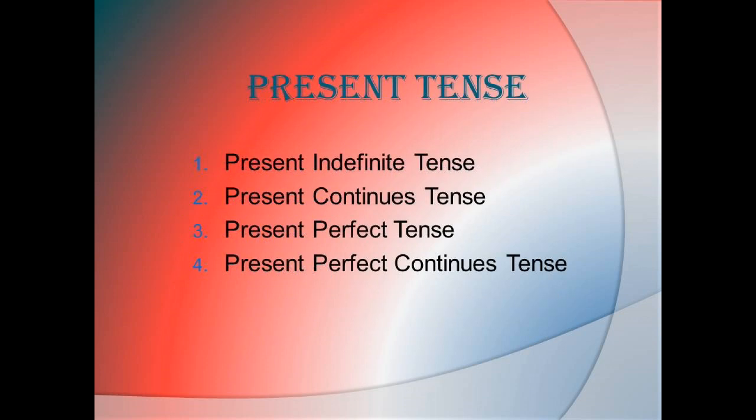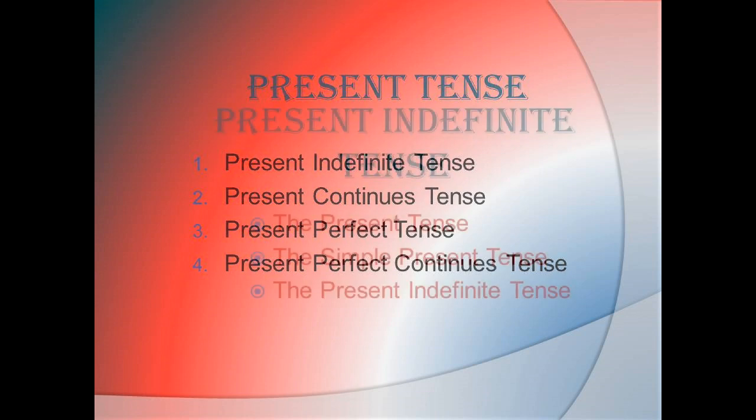In present tense, an activity is related to take place in the present period of time. There are four types of present tense: number one, present indefinite tense; number two, present continuous tense; number three, present perfect tense; number four, present perfect continuous tense.